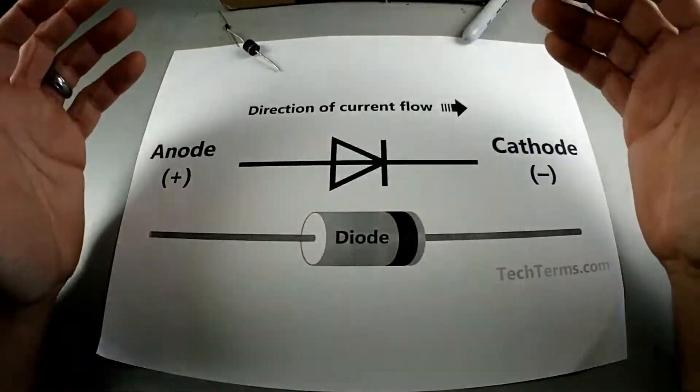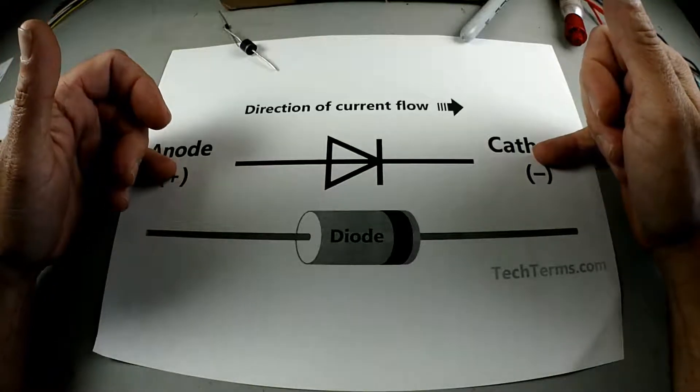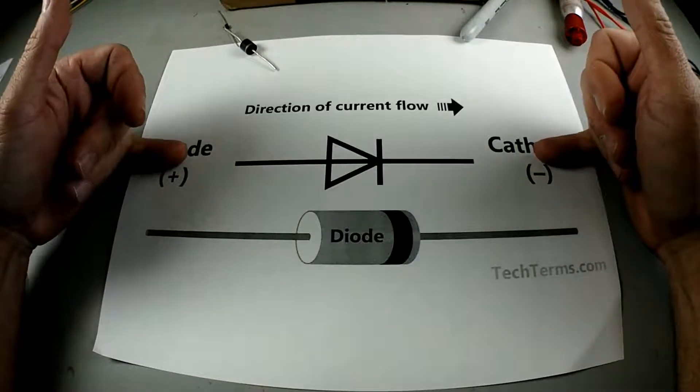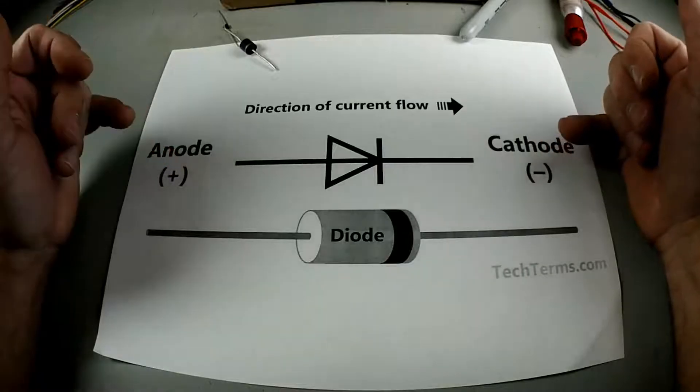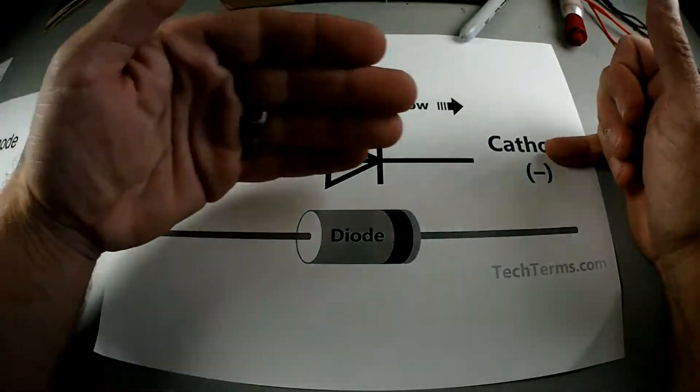So right here I have a diagram of a diode. We have an anode and a cathode. Now 12 volts can only pass through one way. I always try to remember AC power. So anode to cathode will transfer power.